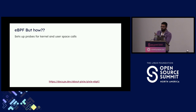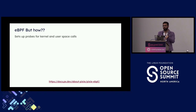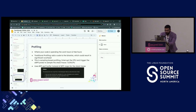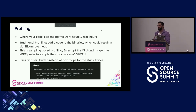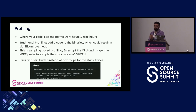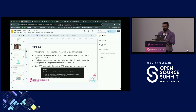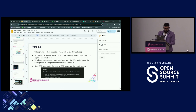Pixie uses eBPF, specifically kprobes. For profiling, it uses BPF perf buffers instead of BPF maps. During development they introduced a cache and replaced the previous approach, giving 40% more efficiency. They introduced BPF perf buffers which contributed to very low CPU overhead overall.